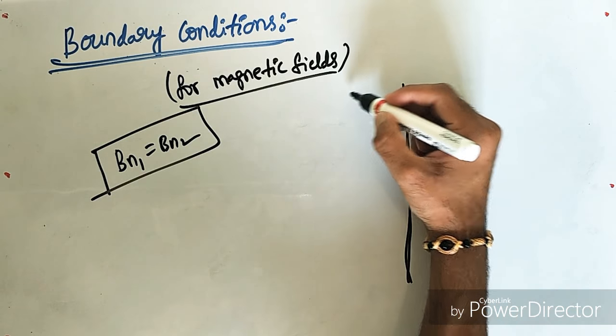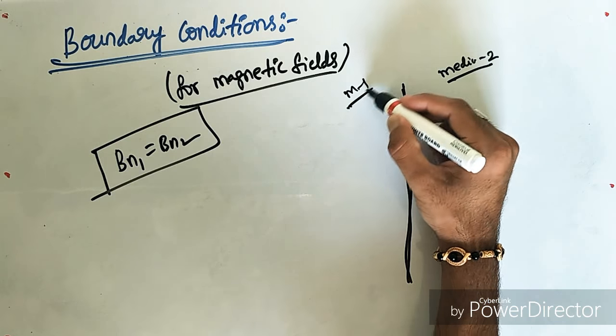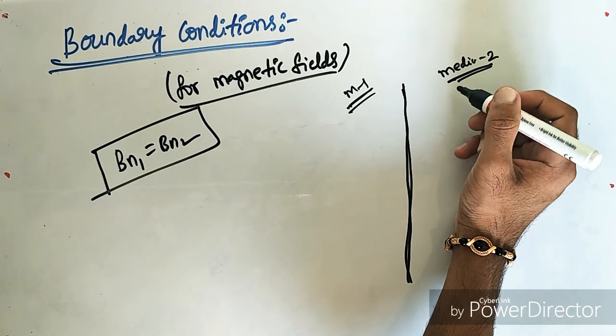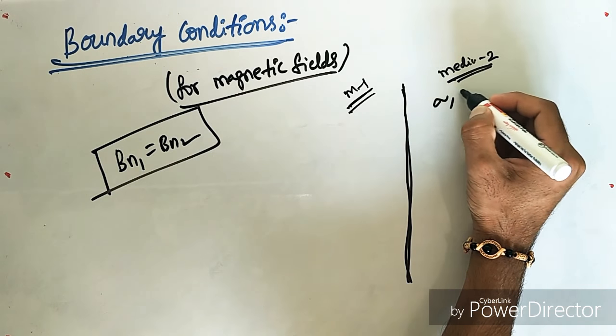Suppose this is my boundary, and this is my medium 1 and this is my medium 2. The properties of any medium are classified based on the properties: conductivity, permittivity, and permeability.